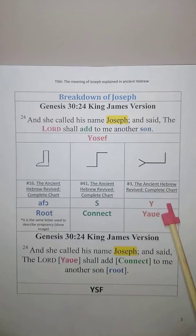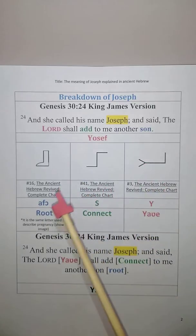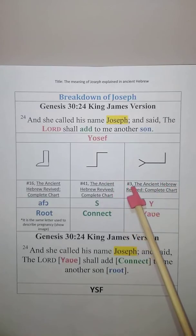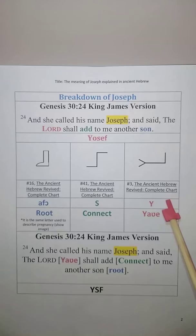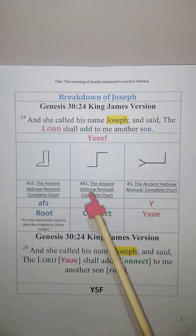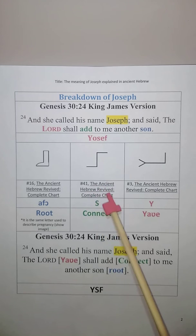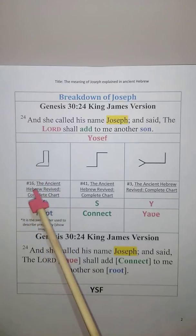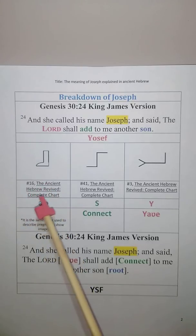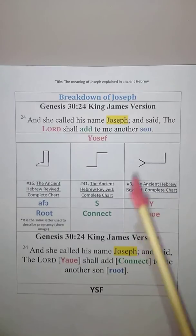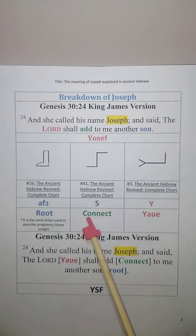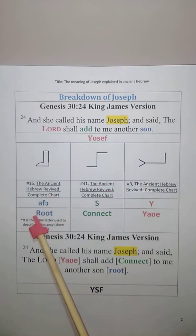The Lord shall add to me another son. In Yosef, there is the Y, the Su, and the Afo or the Fuh. The Y can be found at position 3, the Su at position 41, and the Afo at position 16, all in the ancient Hebrew Revived Complete Chart. The Y means Yahweh, and the Su means to connect.